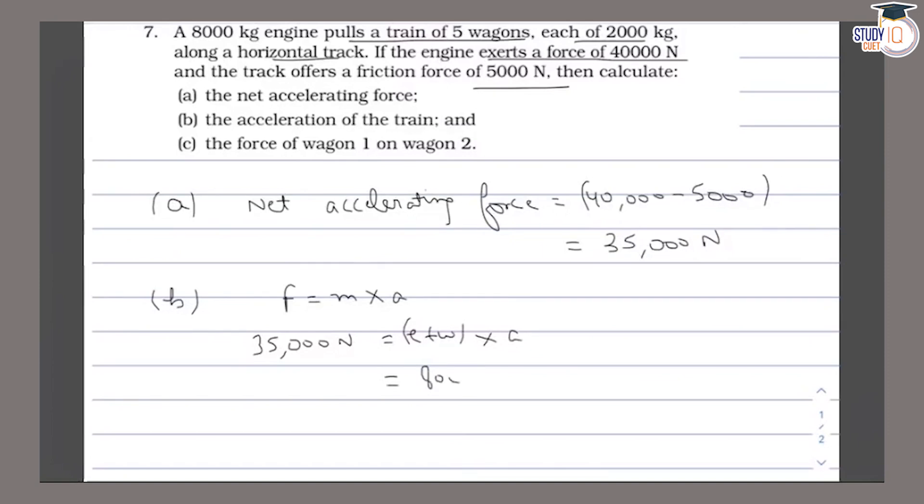Engine mass is 8,000 kg. Each wagon's mass is 2,000 kg, so 5 wagons mass is 10,000 kg. Total train mass is 18,000 kg.